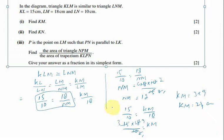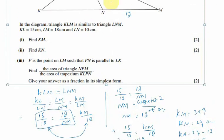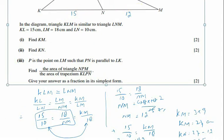So we have found KM. When NM is 12, KM becomes 27 minus 12 equals 15. So here KM is equal to 15, and the full length KM is equal to 27.